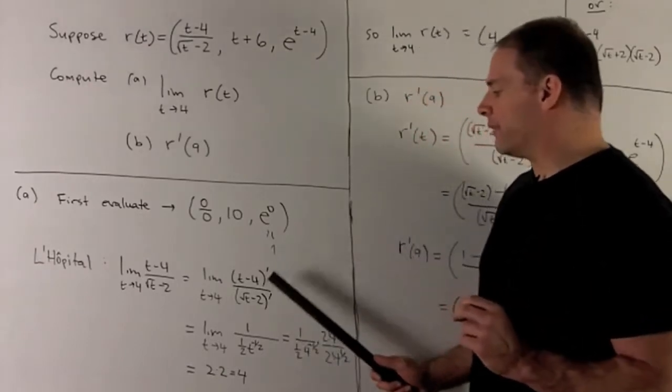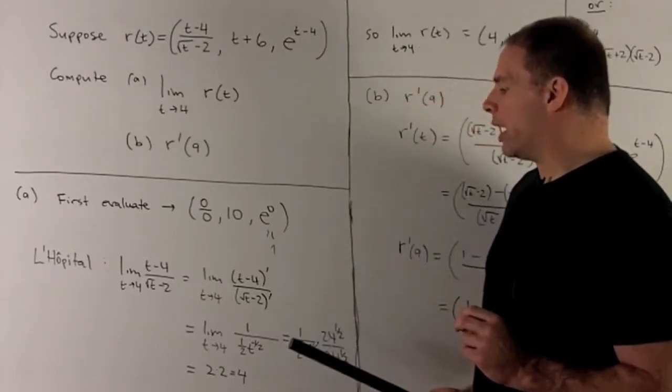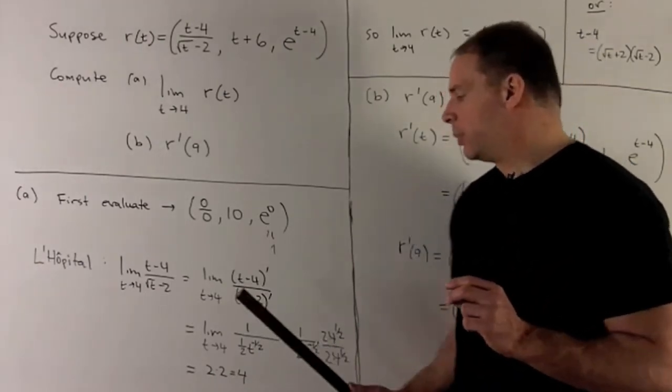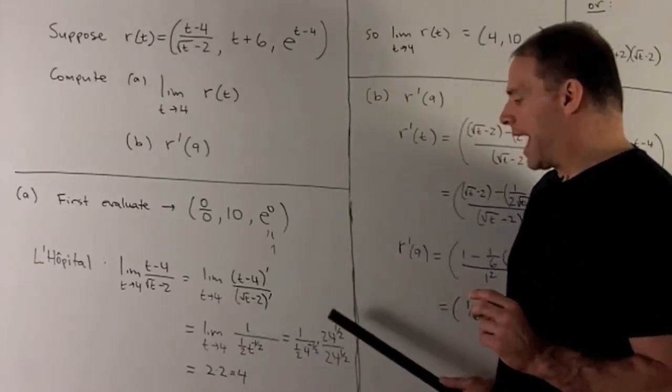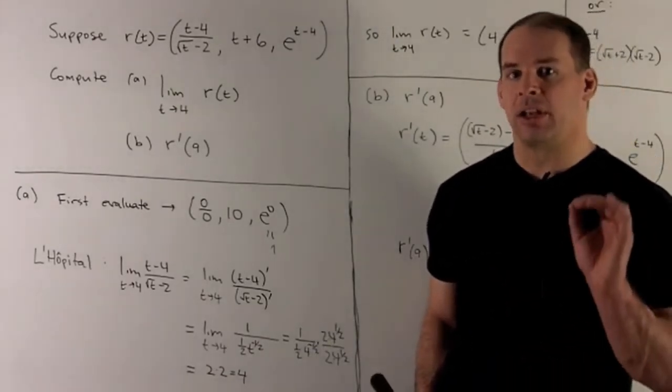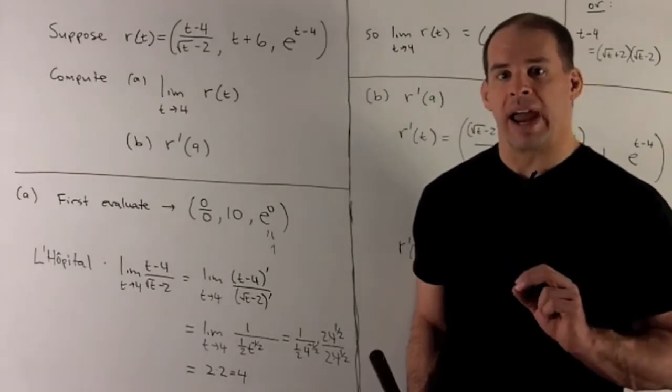If we take these derivatives, the numerator goes to 1, the denominator goes to (1/2)t^(-1/2). If we put 4 in now, we get a perfectly good number. It's kind of a mess, but it's still a number. This will get us to our answer.